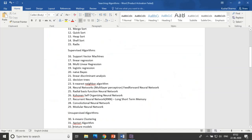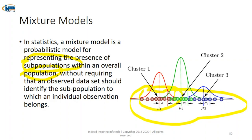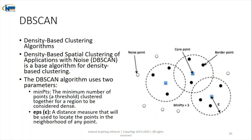The thirty-second algorithm is mixture models. In statistics, we find subpopulations within the overall population using mixture models. As shown in the diagram, we have the complete population and identify subpopulations — cluster one, cluster two, and cluster three. Mixture models help us identify these subpopulations.